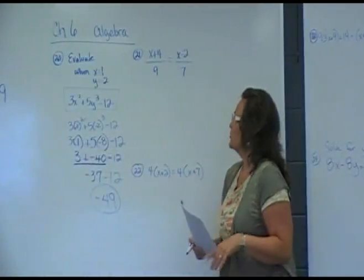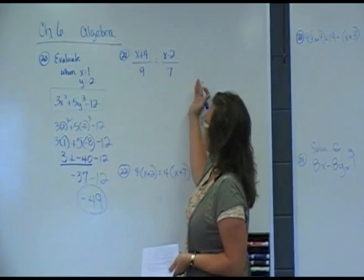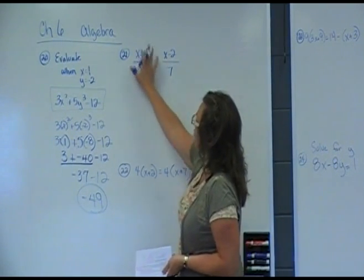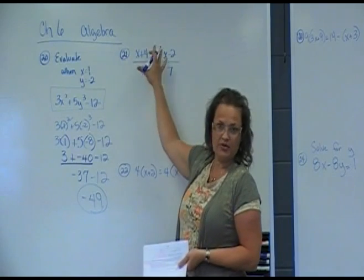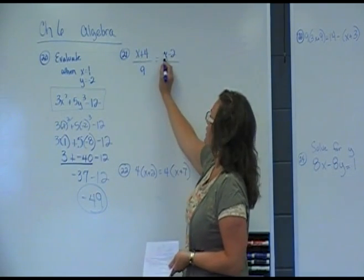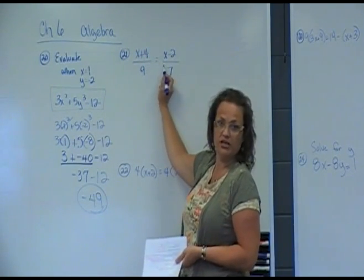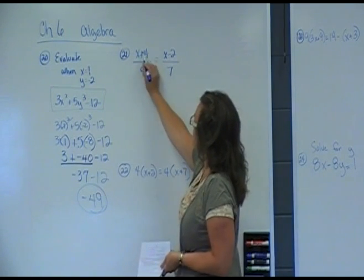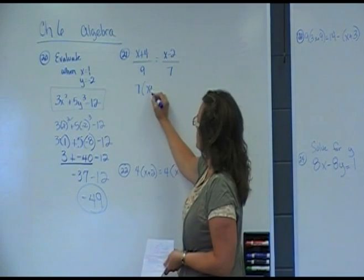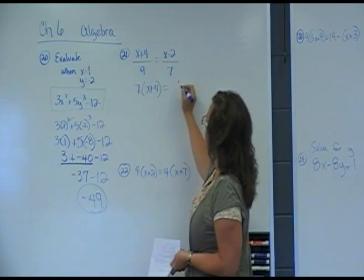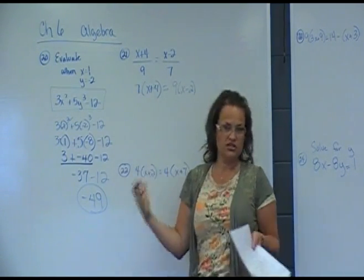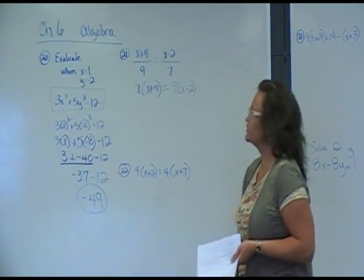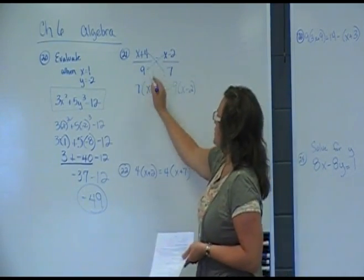Next question, number 21. We mentioned this earlier in Chapter 1. It is a proportion, a fraction equal to a fraction. Anytime you have that set up, that's called a proportion. And the cross products have to be equal. So we can say 7 times x plus 4 has to equal 9 times x minus 2. And you could have had either one of those first. It doesn't matter which way you multiply first. But the cross products are equal.